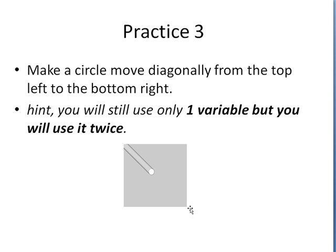Then, practice 3. Make a circle move diagonally. It starts up here and I want it to go down to the lower edge. So as a hint, you're only going to use one variable but you're just going to use that variable twice. When you're done with those three practices show me what you came up with.